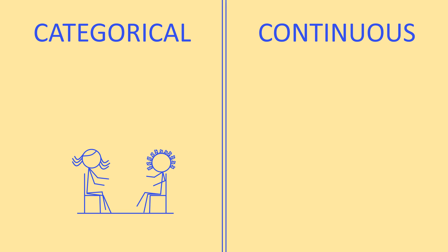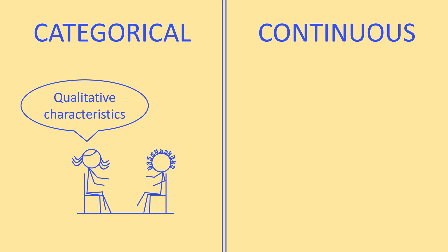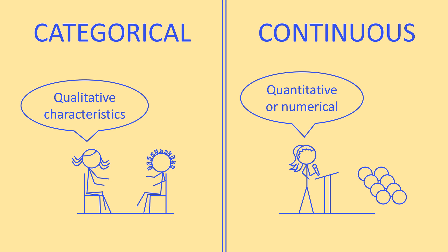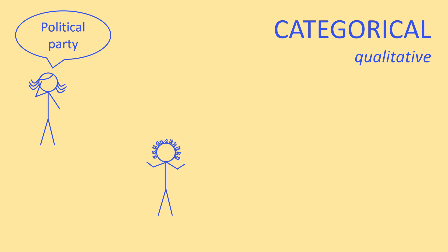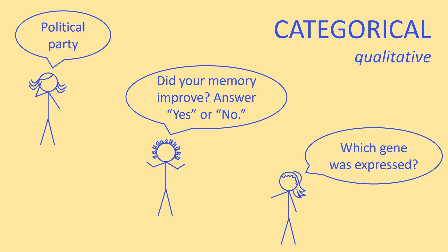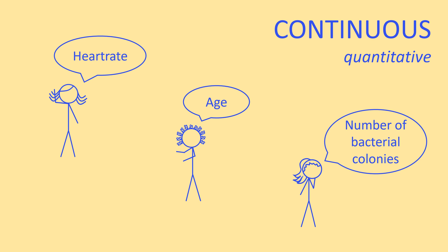The second thing we have to evaluate after purpose is the type of data we're looking at. The two main categories are categorical and continuous. Categorical data is qualitative — even if there are numbers attached, those values don't represent any numerical meaning. Continuous data, on the other hand, is quantitative or numerical; as you increase the value, that represents an increasing amount of that property. Categorical qualities could look like political party, a yes or no answer, or which gene was expressed. If your data involves things like heart rate, age, or number of bacterial colonies, then you're looking at continuous data — even counting colonies is still considered continuous data in statistics.